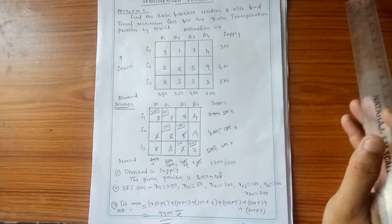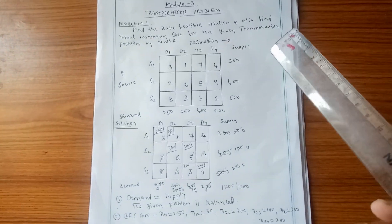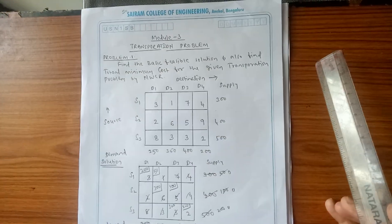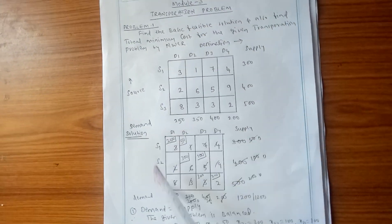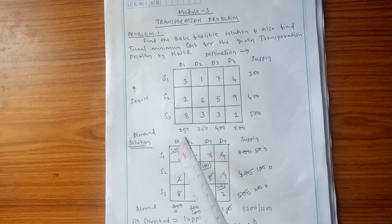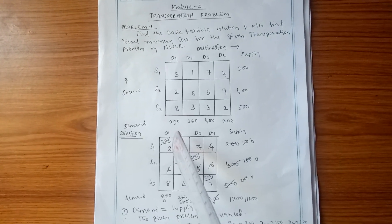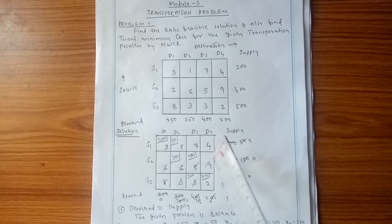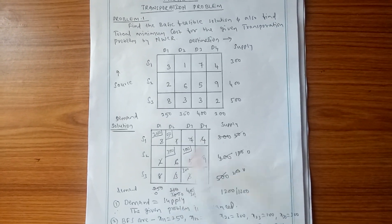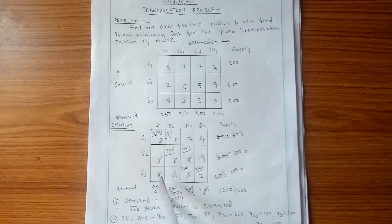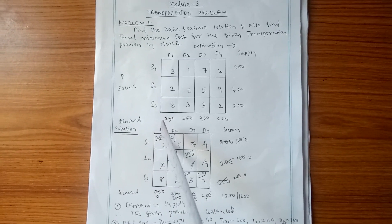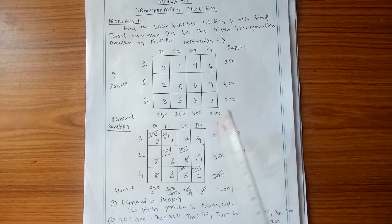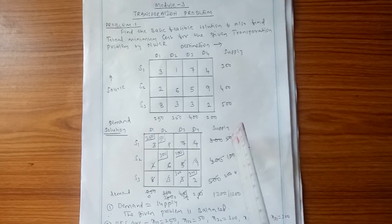Now calculate the basic feasible solution using the Northwest Corner Rule. Select the first box, which has cost 3. Check demand value (250) and supply value (300). The least among them is 250. Allocate 250 here. Subtract: demand becomes 250 − 250 = 0, supply becomes 300 − 250 = 50.